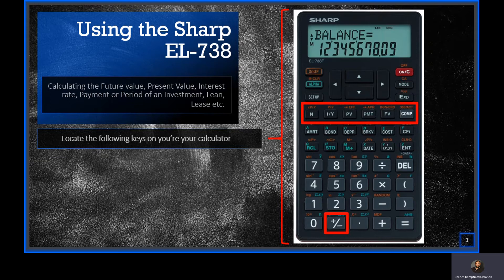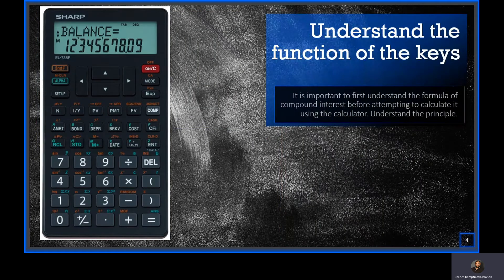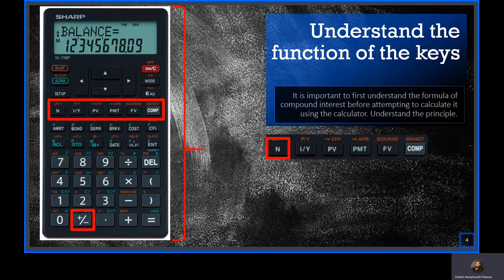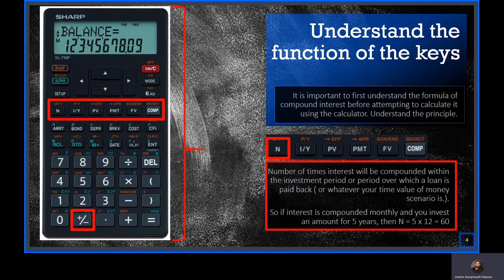Let's understand the function of the keys. It is important to first understand the formula of compound interest before attempting to calculate it using the calculator — understanding the principle is extremely important. The keys we will be using we will now focus on individually. Let's first focus on N. N is the number of times that interest will be compounded within the investment period, or the period over which a loan is paid back, or whatever your time value of money scenario is.